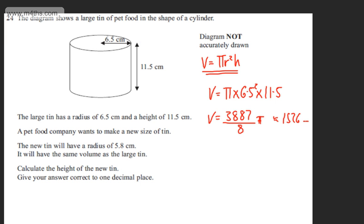So what we want to do now is find the height of the smaller tin. So if we go back to this, this is the general formula for the volume of the cylinder. I have already got the volume so I'm going to say that 3887 over 8 times by π will be equal to πr² multiplied by the height.